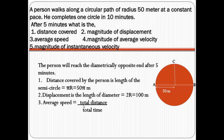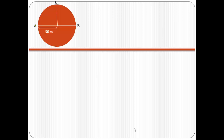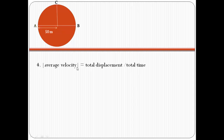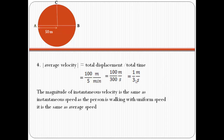Average speed is total distance upon total time. Total distance is 50 pi and total time is 5 minutes. Converting to seconds and simplifying, we get 5/6 meters per second. Magnitude of average velocity is total displacement upon total time — total displacement is 100 meters over 5 minutes — converting and simplifying gives 1/3 meters per second. Finally, magnitude of instantaneous velocity is the same as instantaneous speed since the person is walking with uniform speed, which equals average speed — that is 5/6 meters per second.